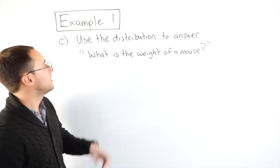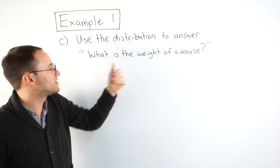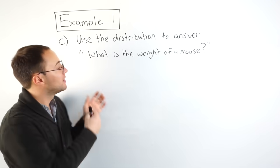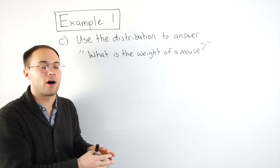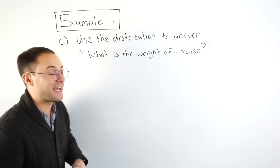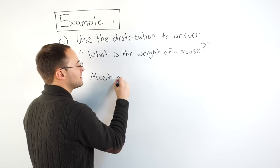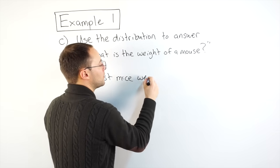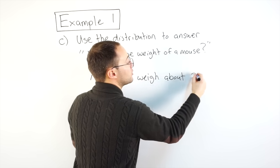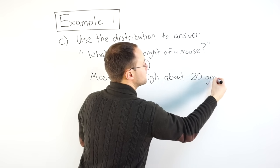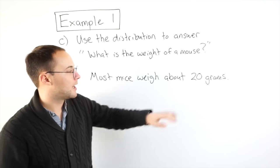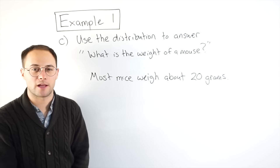Okay. And finally, part C, use the distribution to answer what is the weight of a mouse, our original statistical question. Well, looking at that data, looking at our dot plot and seeing those clusters and the peaks, we can say that most mice weigh about 20 grams. Right? Our cluster was around 20. Our peak was at 20. So that's how we would answer that question.